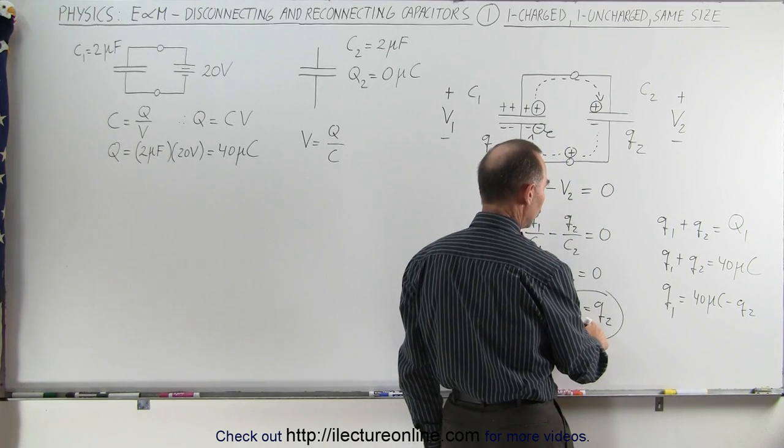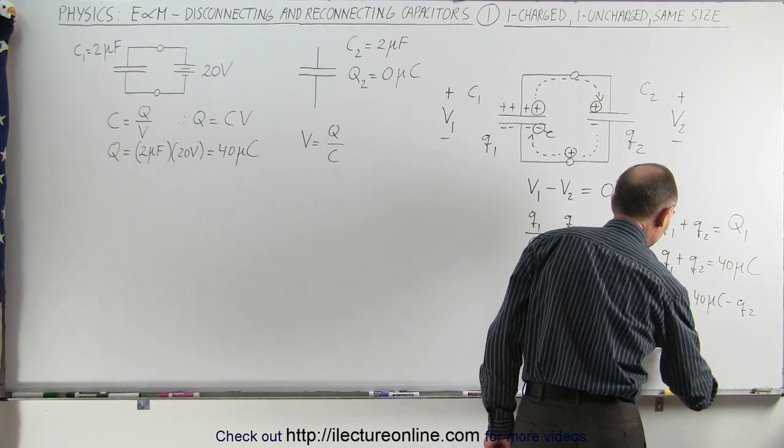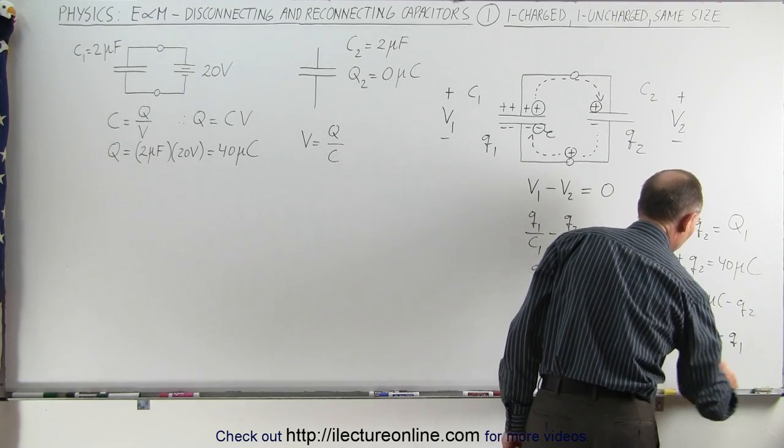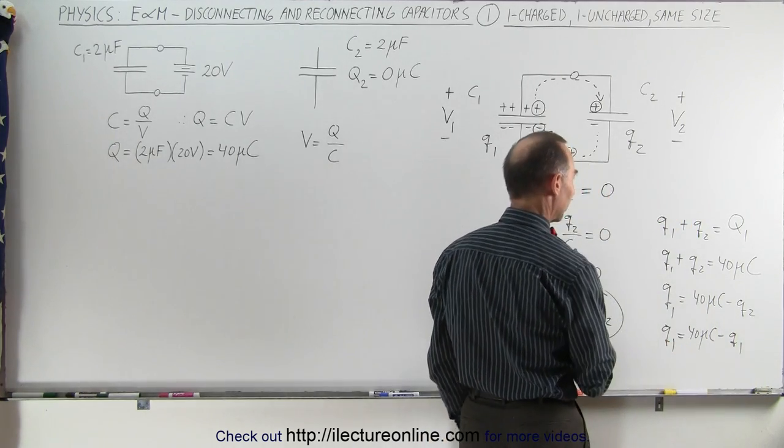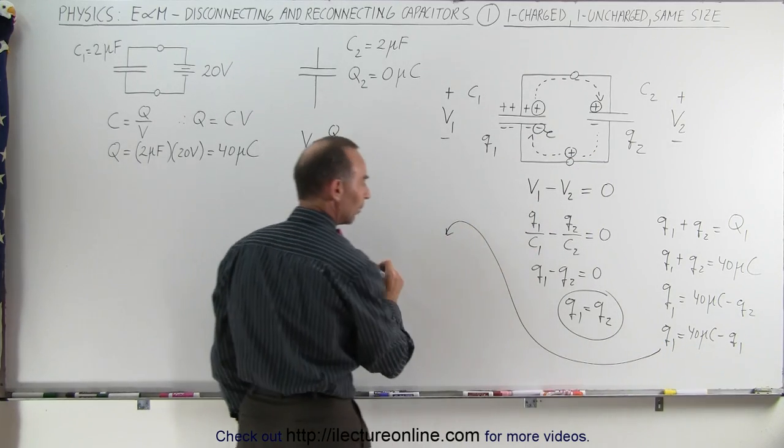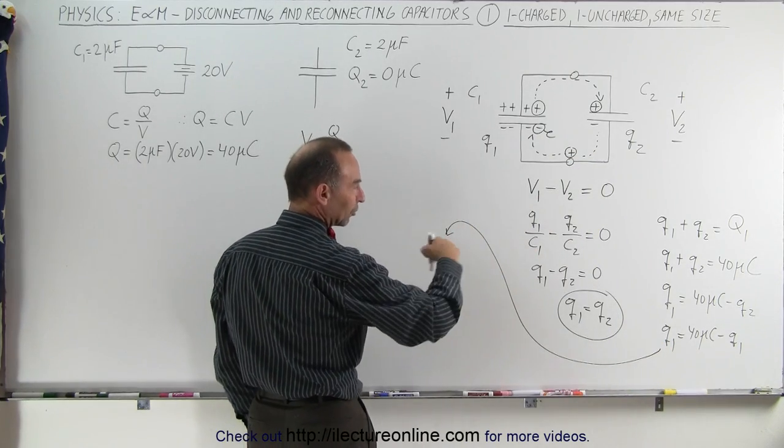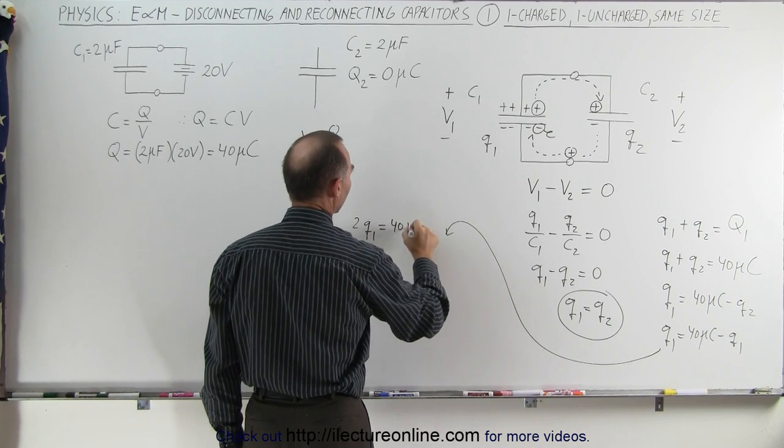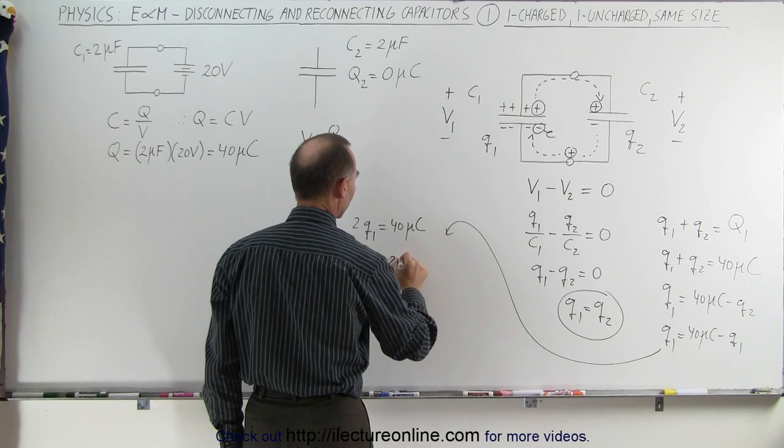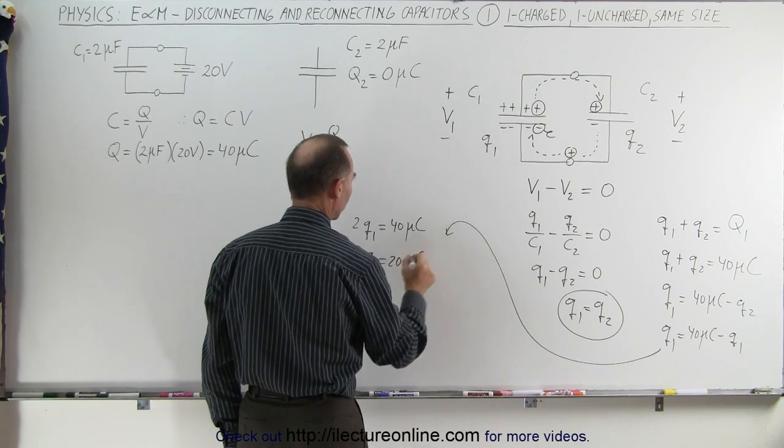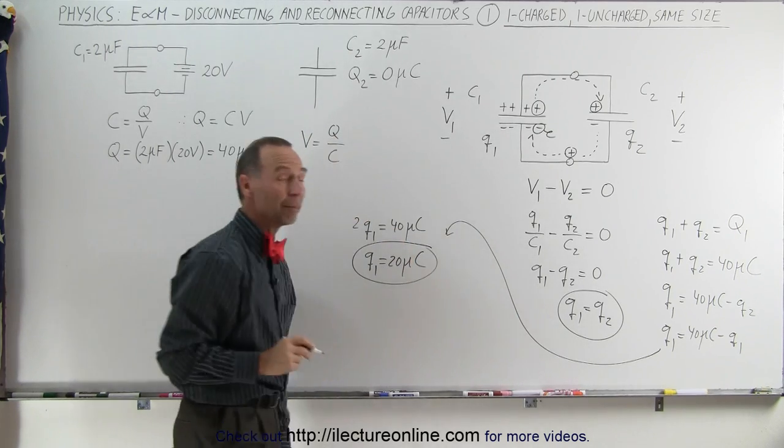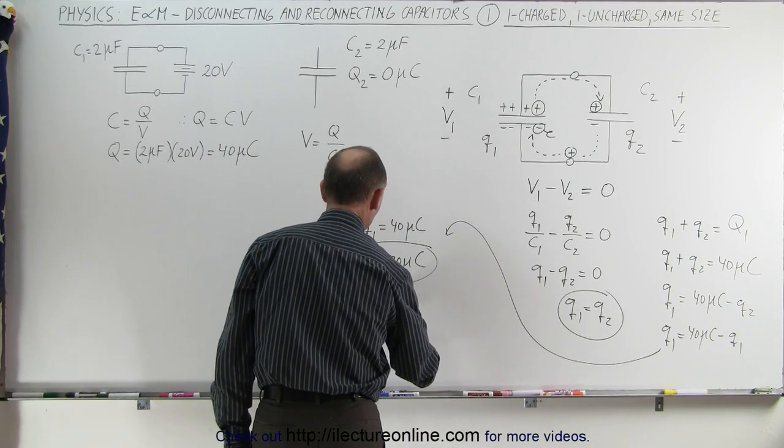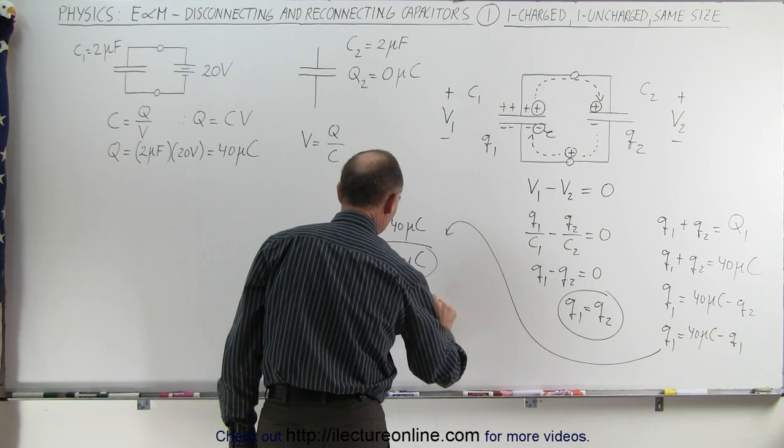And since Q2 is equal to Q1, we can write that Q1 is equal to 40 microcoulombs minus Q1, or I'm running out of room here. Let me come over here to finish it. So we can then say that when we bring that Q1 across, 2Q1 is equal to 40 microcoulombs, which means that Q1 is equal to 20 microcoulombs. And if Q1 is equal to 20 microcoulombs, and it's equal to Q2, that means that Q2 is also equal to 20 microcoulombs.